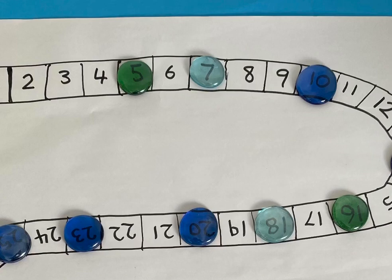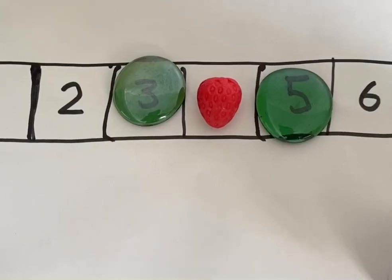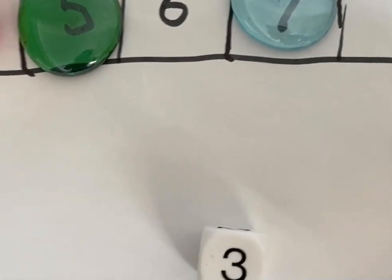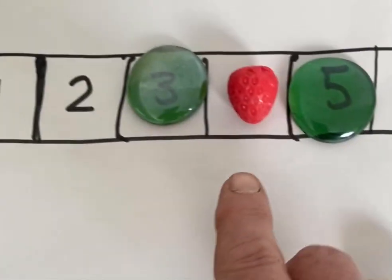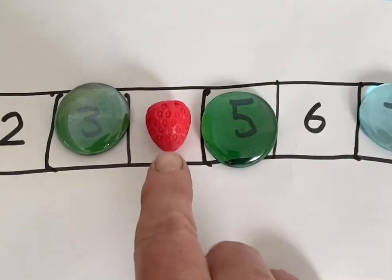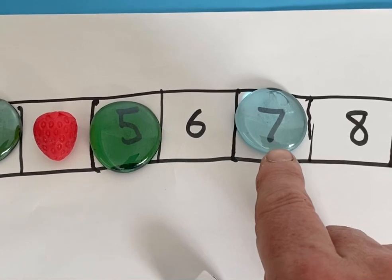This is great for number sense and calculation skills. If I'm on four and I roll a three, for example, four minus three - one, two, three - is one. Four plus three - one, two, three - is seven.